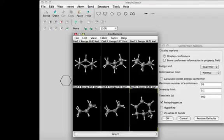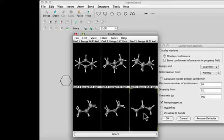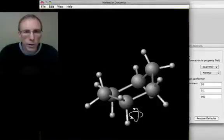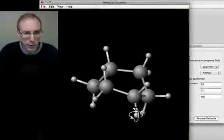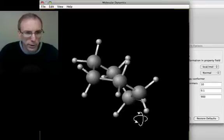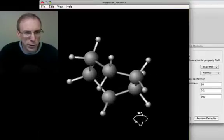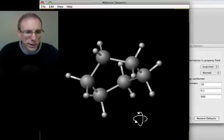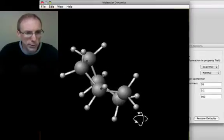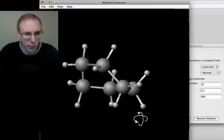Let's use the boat conformation to begin a molecular dynamics trajectory. There are two things to notice in the case of cyclohexane from these dynamics simulations. The first is that the molecule always remains in the boat or the twist boat form over the time scale of this molecular dynamics run.